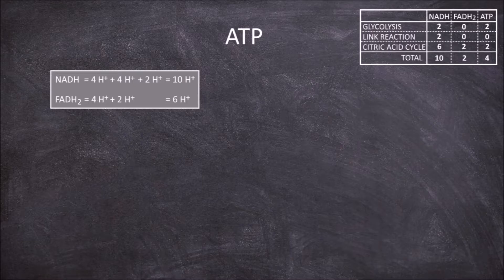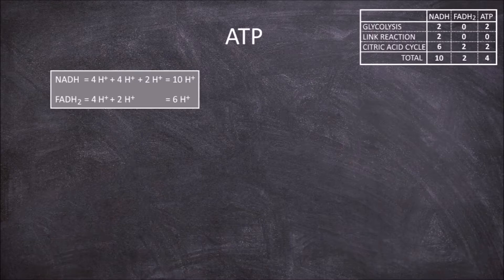This gives a total of 6 hydrogen pumped for each FADH2 molecule. But how many ATP are produced for each NADH and FADH2?